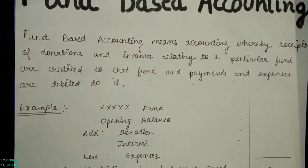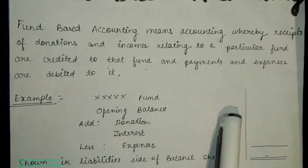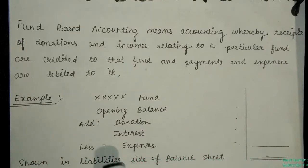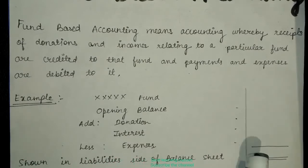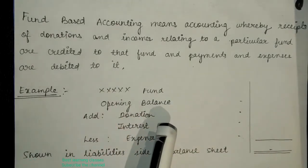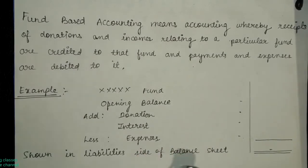Let's take an example of a building fund. First, we deal with the opening balance, then donations or interest received, or receipts from selling tickets. Any receipts related to the fund are added to it, and the expenses of the fund reduce it. The fund will always show on the liability side of the balance sheet when it has a credit balance — meaning a positive balance.